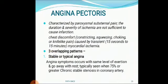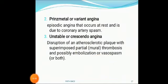Angina pectoris is characterized by paroxysmal substernal pain. The duration and severity of ischemia are not sufficient to cause infarction. It is chest discomfort caused by transient myocardial ischemia. There are three overlapping patterns: stable or typical angina, where symptoms occur with the same level of exertion and go away with rest, typically seen with 75% or greater chronic stable stenosis in coronary artery; Prinzmetal or variant angina, which is episodic angina occurring at rest due to coronary artery spasm; and unstable or crescendo angina, involving disruption of an atherosclerotic plaque with superimposed partial thrombosis and possibly embolization or vasospasm.